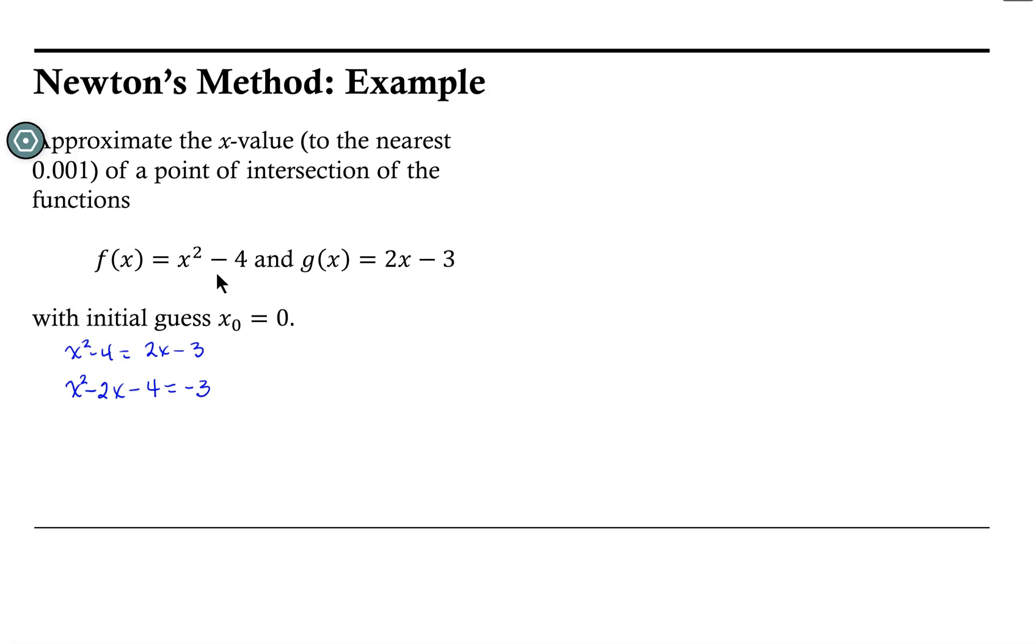Then I would add 3 to both sides of the equation, ending up with x² - 2x - 1 = 0. Now x² - 2x - 1 is not easily factorable. Typically we might use the quadratic formula to solve that.